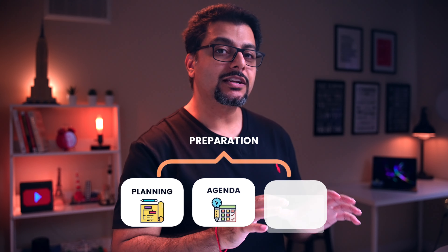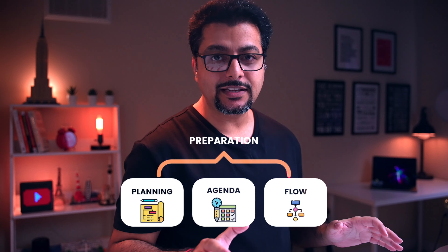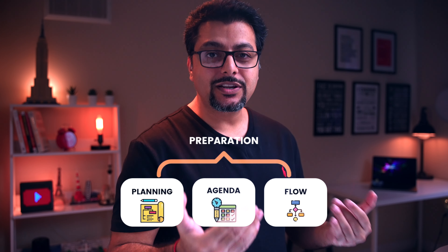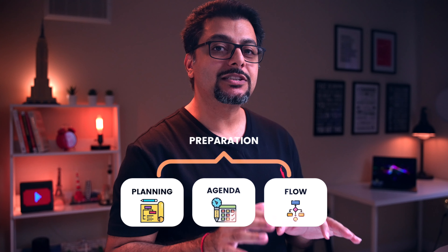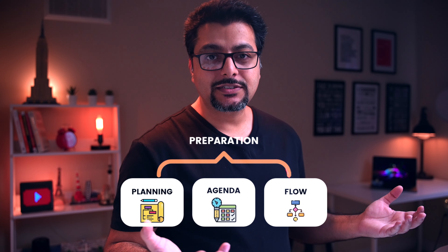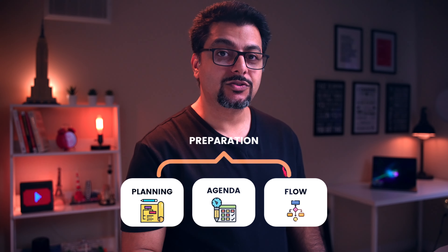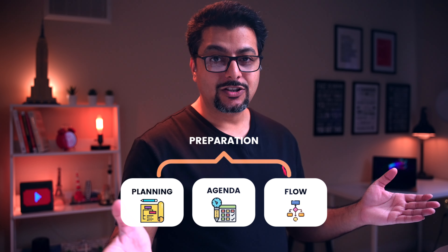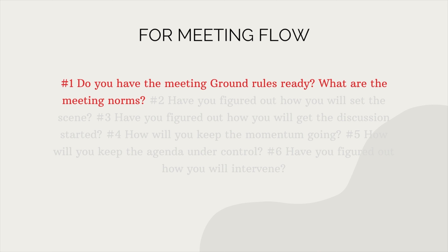Once you have zeroed in on the facilitation process and penned down a compelling agenda, the final component of preparation is to consider how you will direct and control the meeting flow. This is where you rehearse your facilitation skills and examine what-if scenarios — like, what if there is a huge disagreement, or what if your team is unable to find a solution? I have prepared a list of six questions. Number one: do you have the meeting ground rules ready? What are the meeting norms — things like what kind of interactions do you expect, how would you guarantee that people respect each other's opinions, and how will questions be handled? Write down these rules in advance and propose and request agreement before the start of the event.